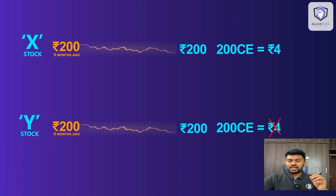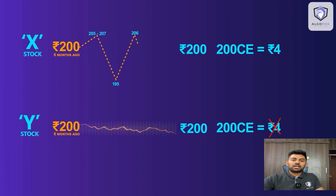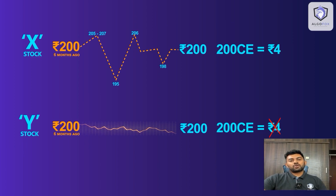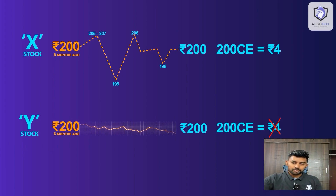Let us say this is how stock X moved in the last 6 months: it might have gone up to maybe 205 or 207, then gone down a few points, then gone up again by a few points, then been relatively flat, and then ending at 200 rupees. When I see the graph of the last 6 months, it gives me confidence that stock X has performed in a relatively stable way. Hence, selling the 200 call can give me some profit if I have a bearish view on stock X.